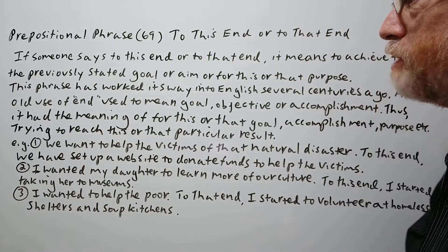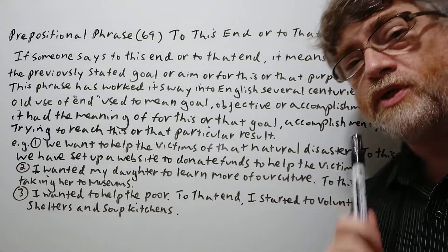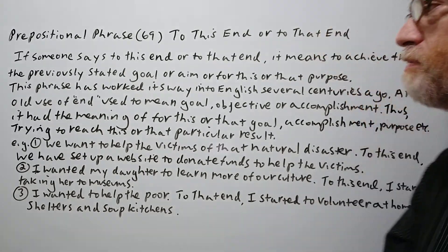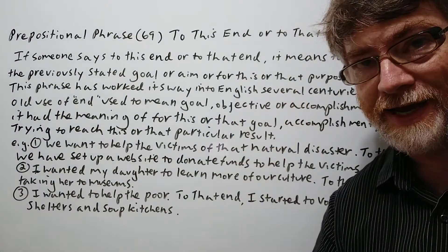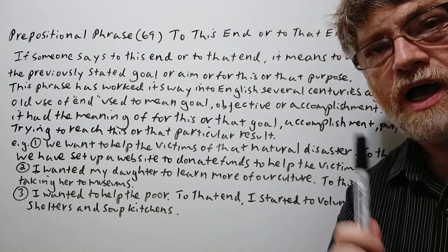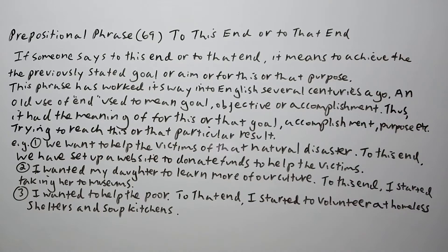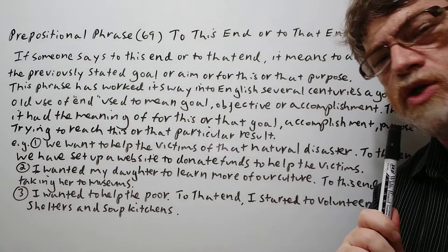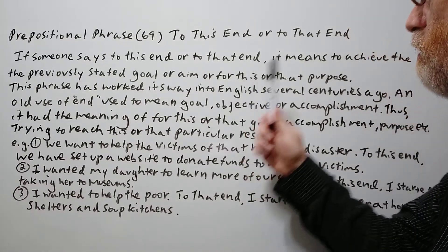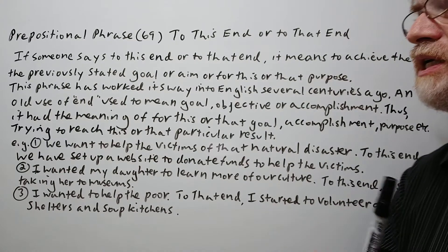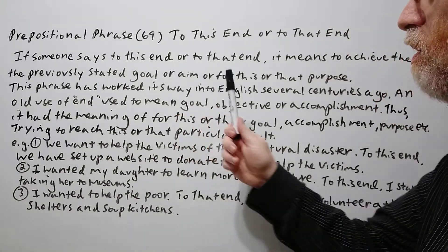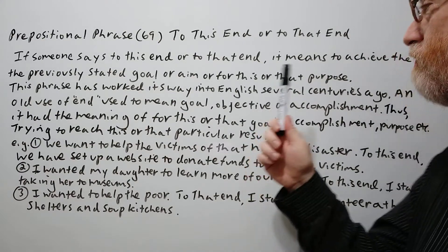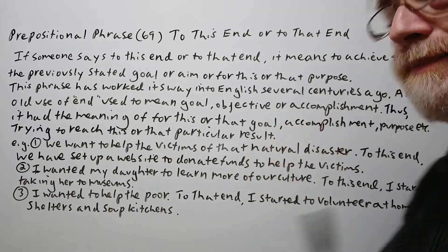Hi, this is Tutor Nick P and this is prepositional phrase 69. The prepositional phrase is 'to this end' or 'to that end.' If someone says 'to this end' or 'to that end,' it means to achieve the previously stated goal or aim, or for this or that purpose.